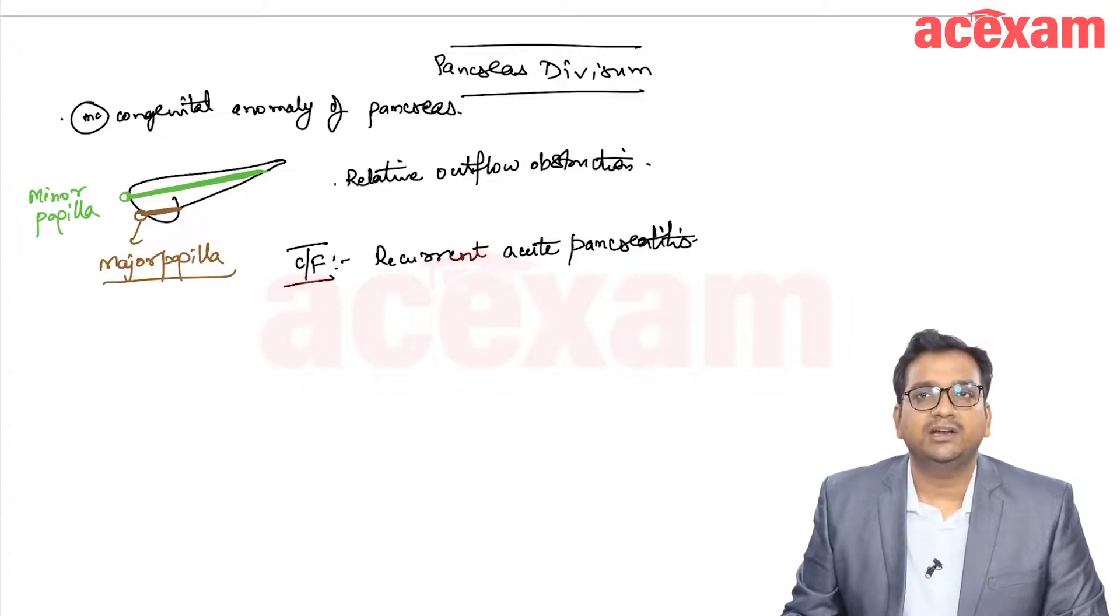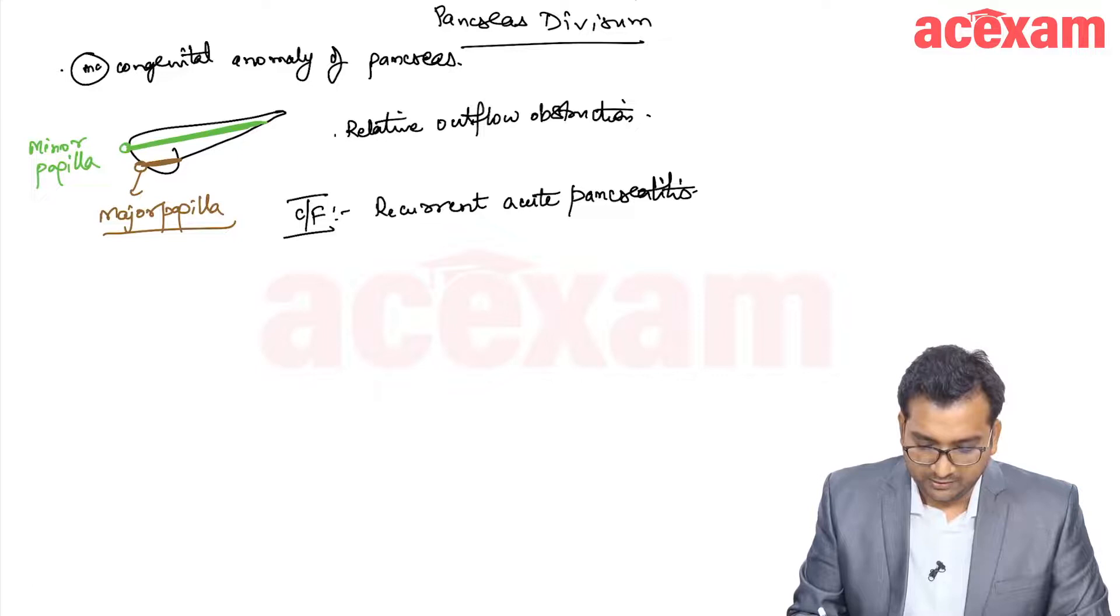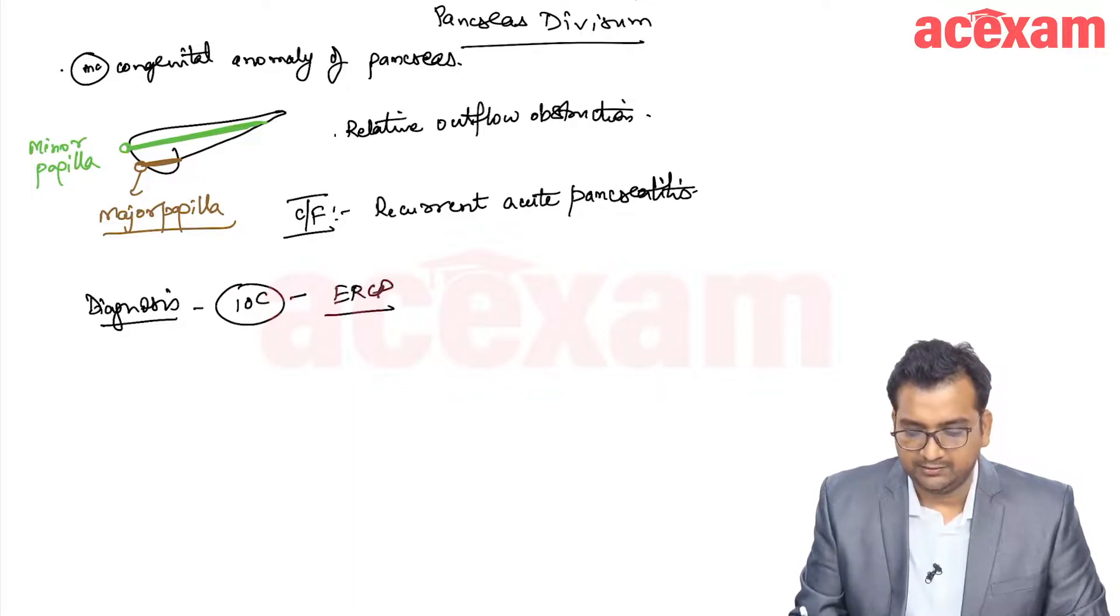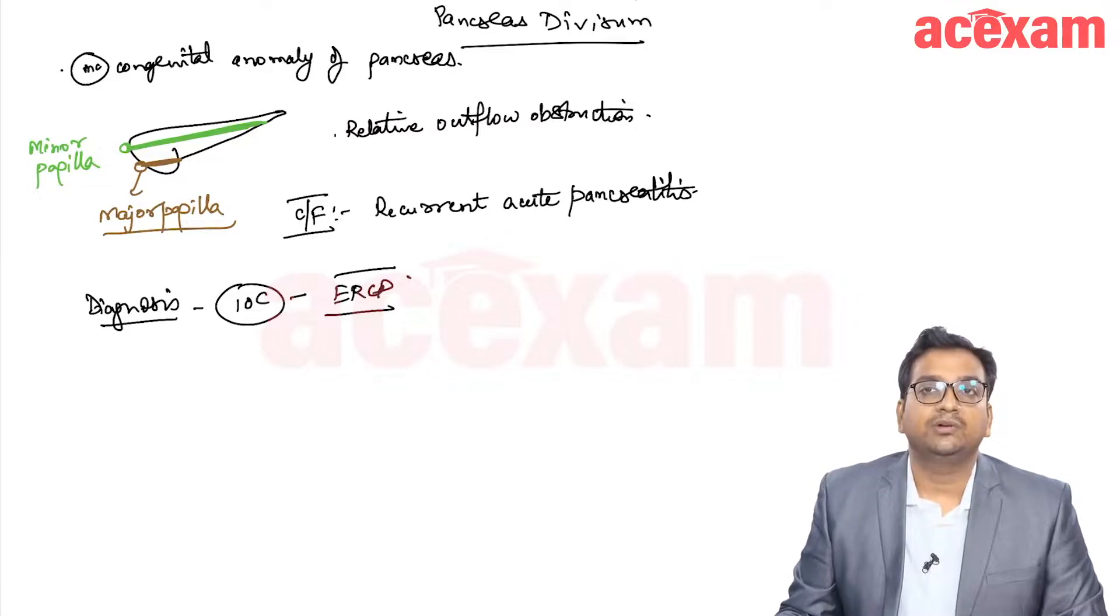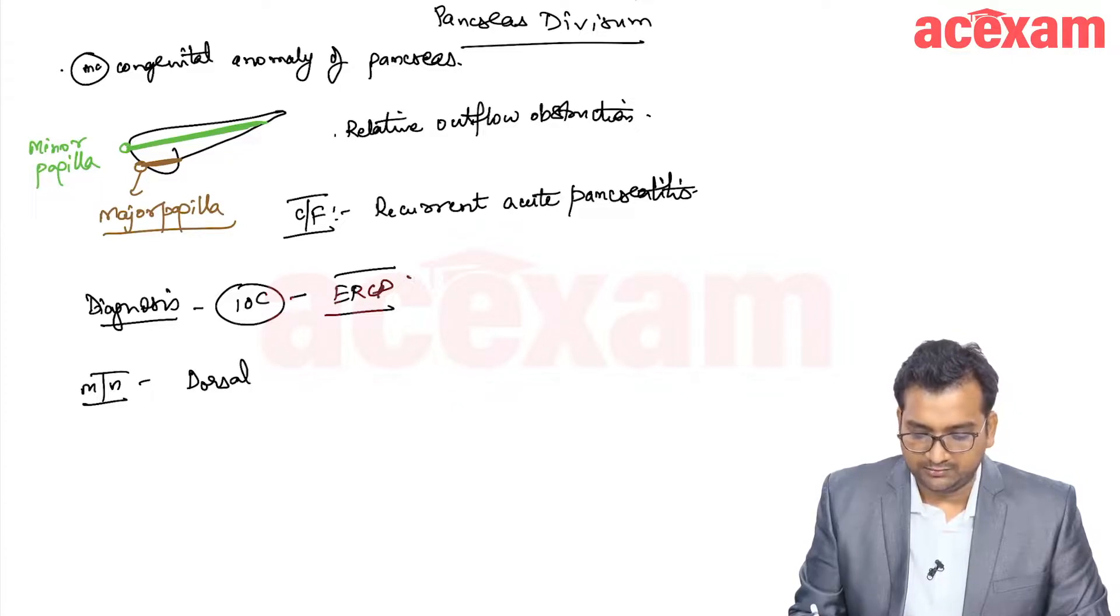This leads to recurrent acute pancreatitis. The investigation of choice for diagnosis is ERCP. ERCP is also the gold standard because management is dorsal duct sphincterotomy.